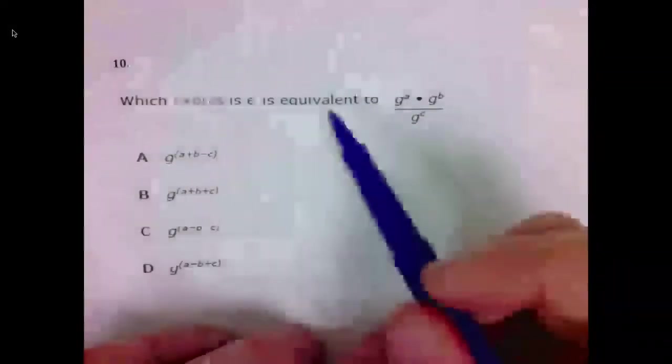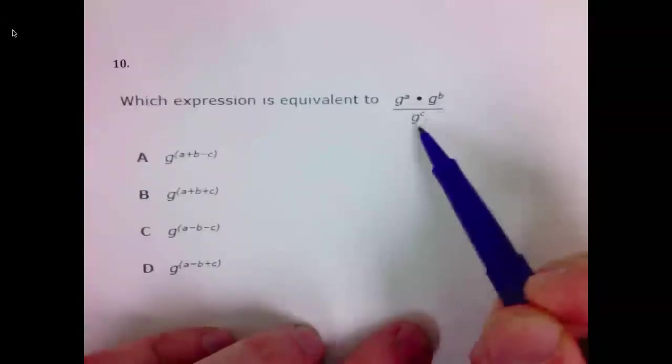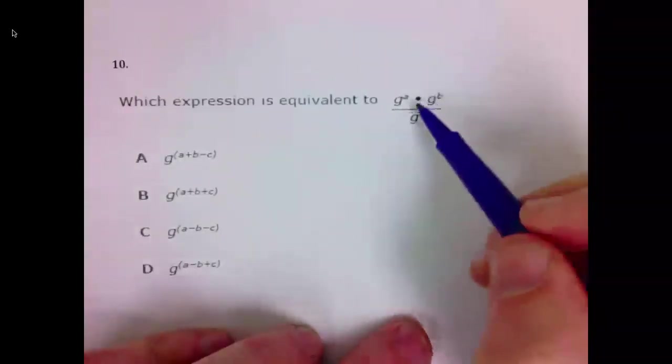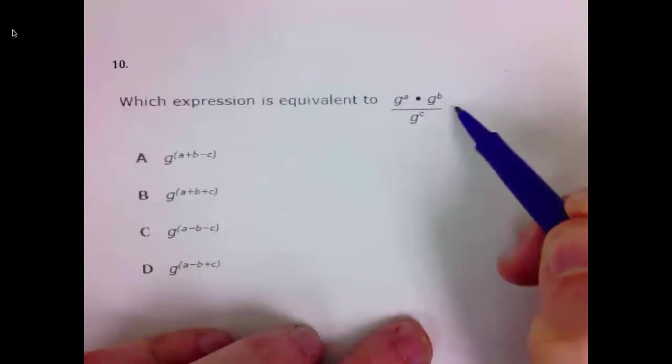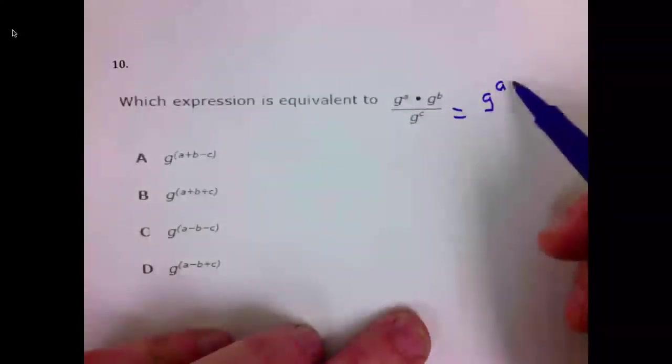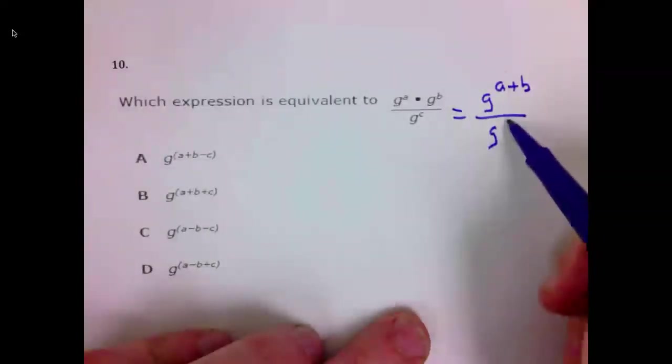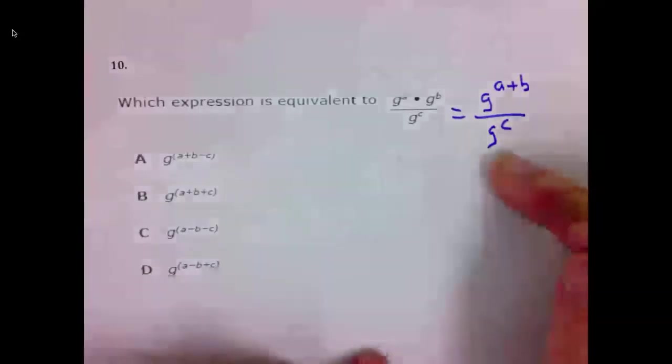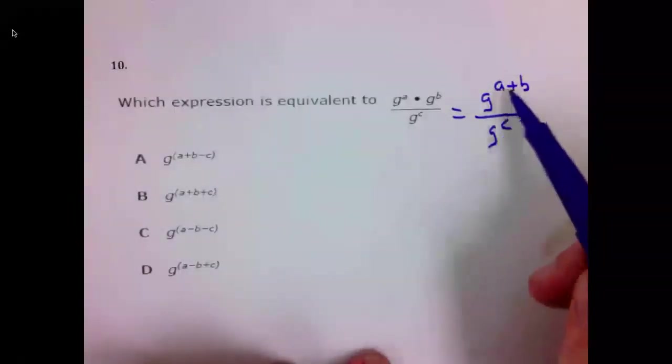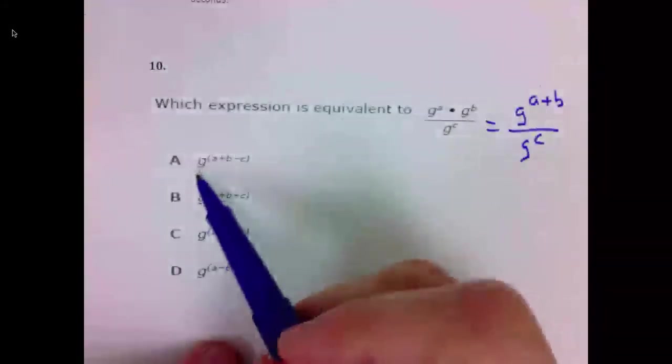A is indeed the correct answer. 9 is A. Number 10. Which expression is equivalent to G to the A times G to the B divided by G to the C? Well, hopefully you remember when we multiply, we add exponents. So this numerator would be G to the A plus B divided by G to the C. Well, when we divide, we subtract. So the final expression is going to be A plus B minus C. And indeed, 10 says that.